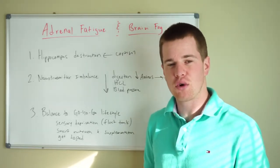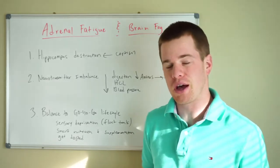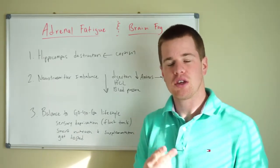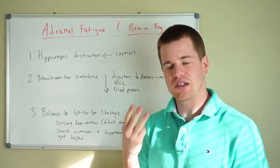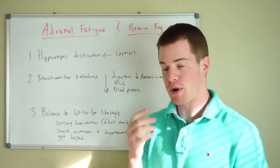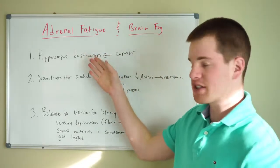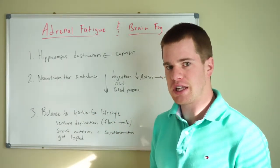There are over a hundred neurotransmitters that have been identified. You probably mainly hear about serotonin, dopamine, epinephrine, adrenaline, these other types of hormones that can be considered neurotransmitters. And then GABA, which is the brakes of the brain. During this adrenal fatigue picture, many of your neurotransmitters are going to become imbalanced and depleted.